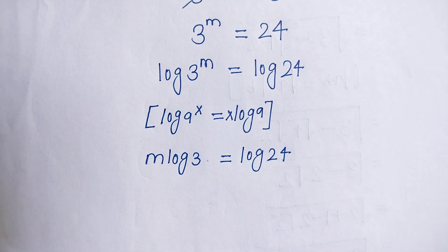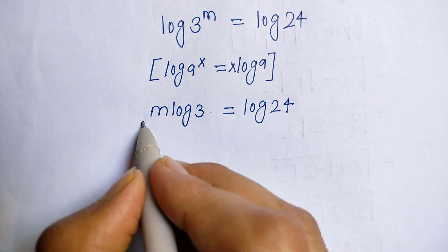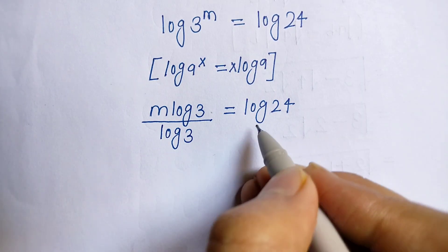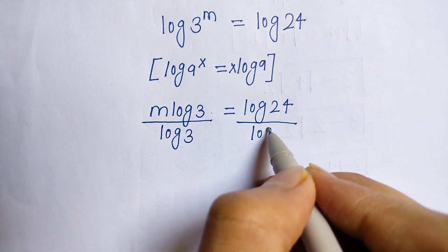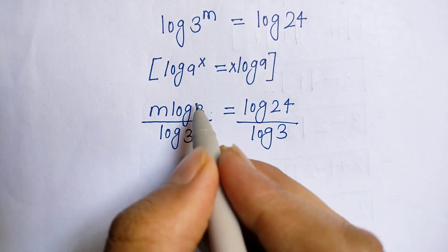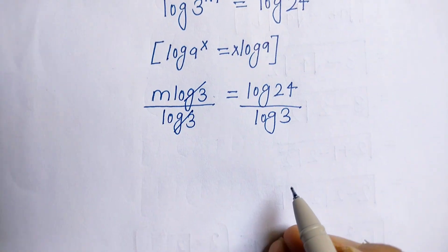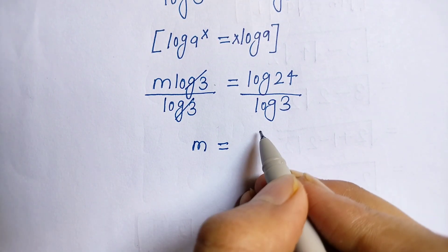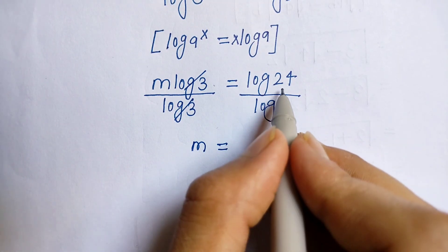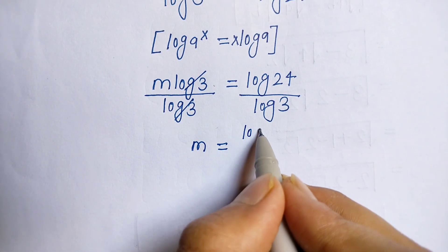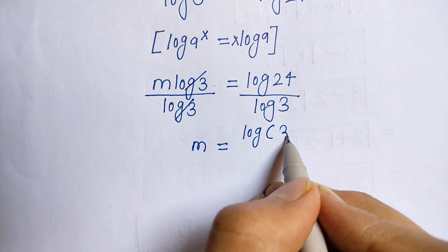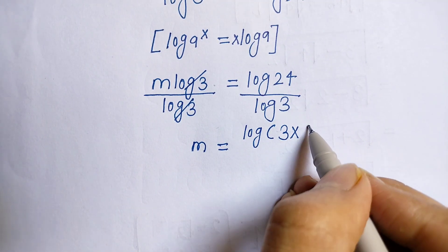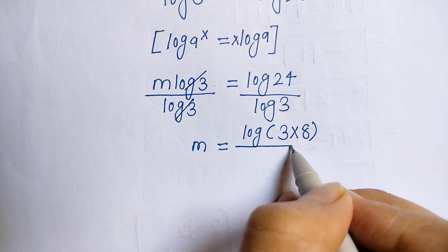Now we divide both sides by log 3. The log 3 cancels, and we get m is equal to log 24 divided by log 3. We can write log 24 as log of 3 into 8, since 3 times 8 is 24, upon log 3.